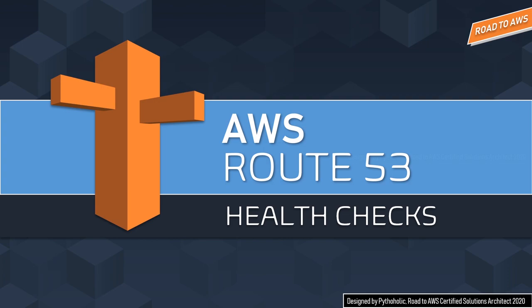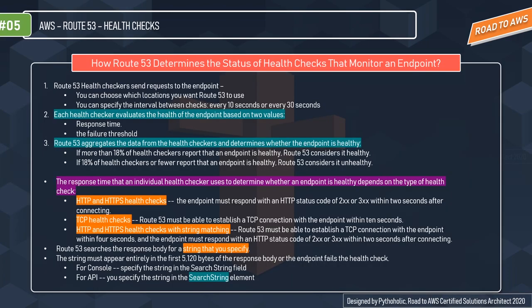The first question is: how does Route 53 determine the status of health checks that monitor an endpoint? When you configure Route 53, health checkers send requests to the endpoints. You can choose which location you want Route 53 to use and specify the interval between checks — either every 10 seconds or every 30 seconds.